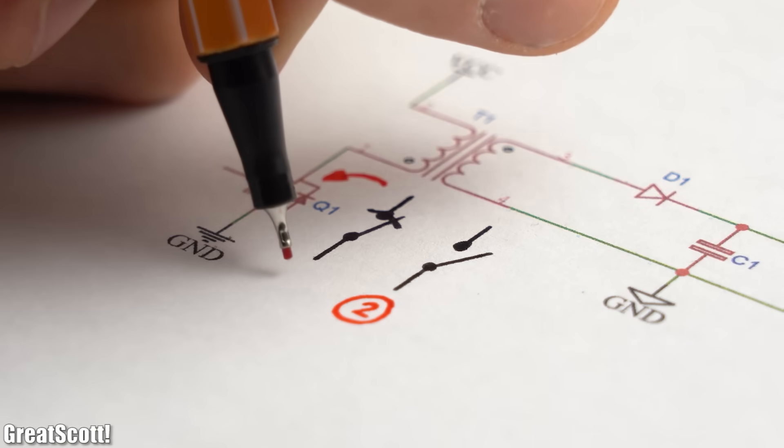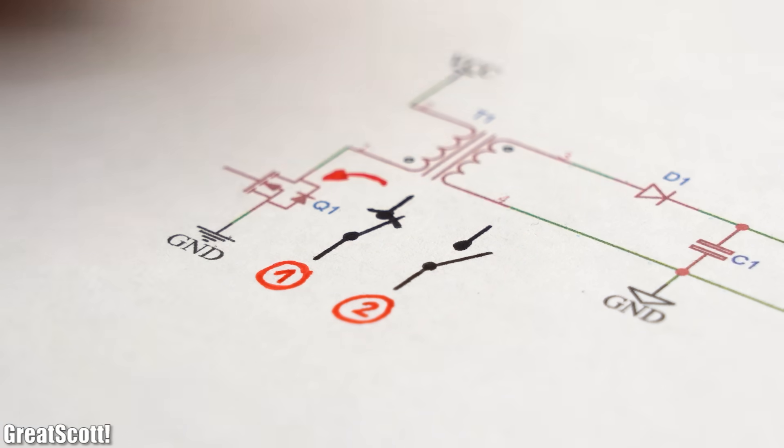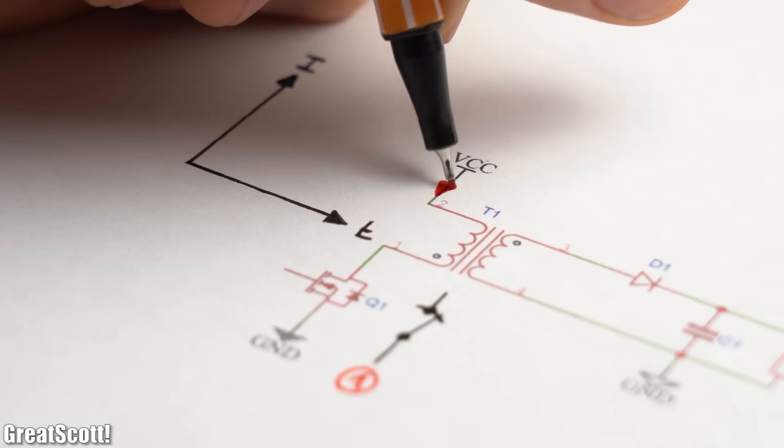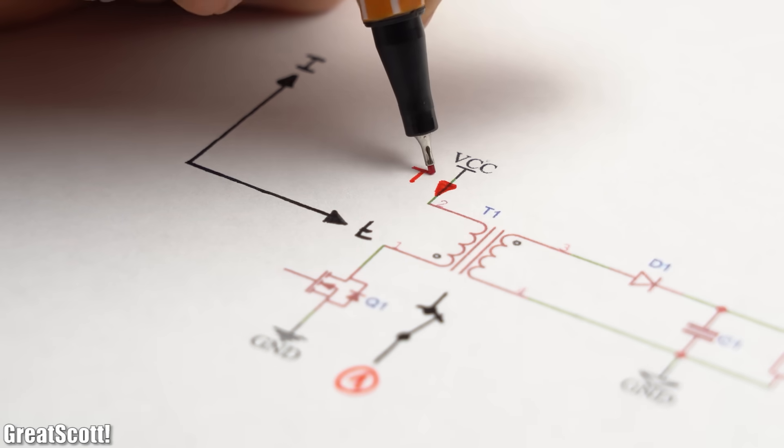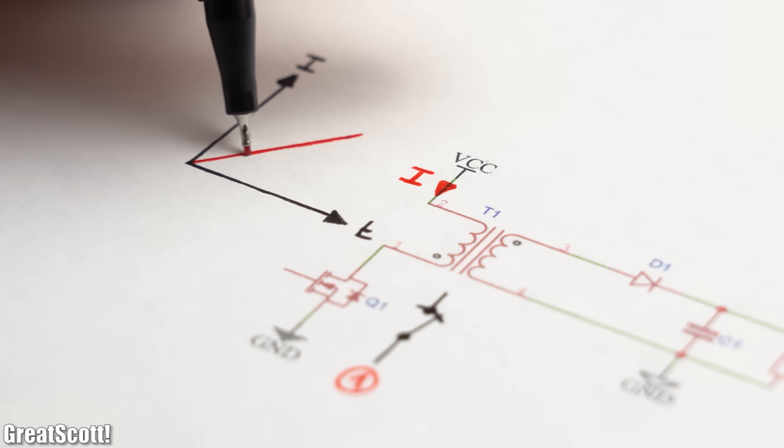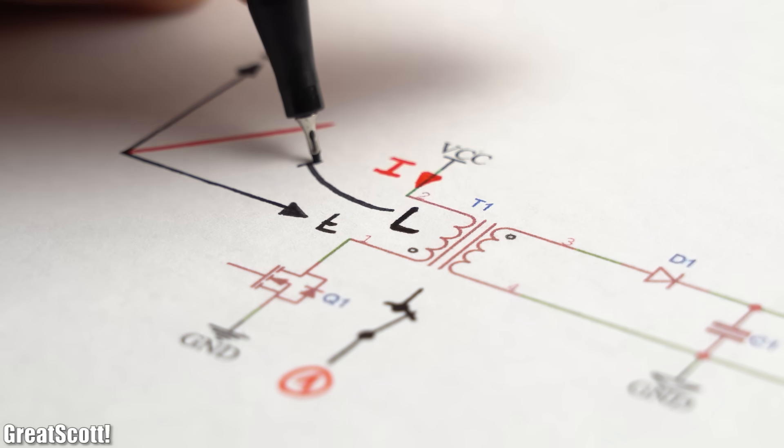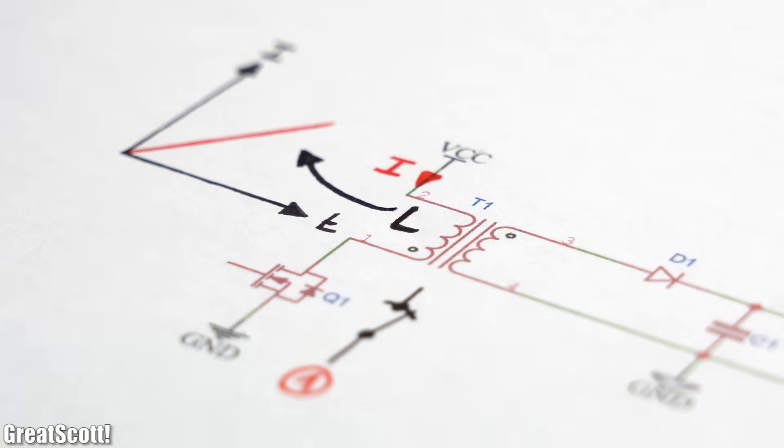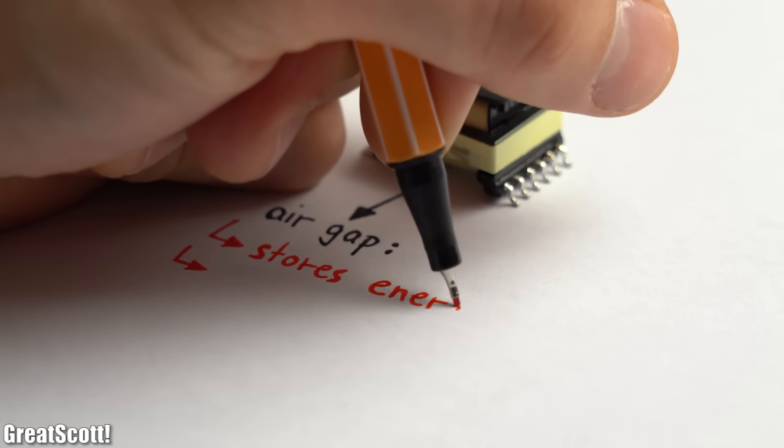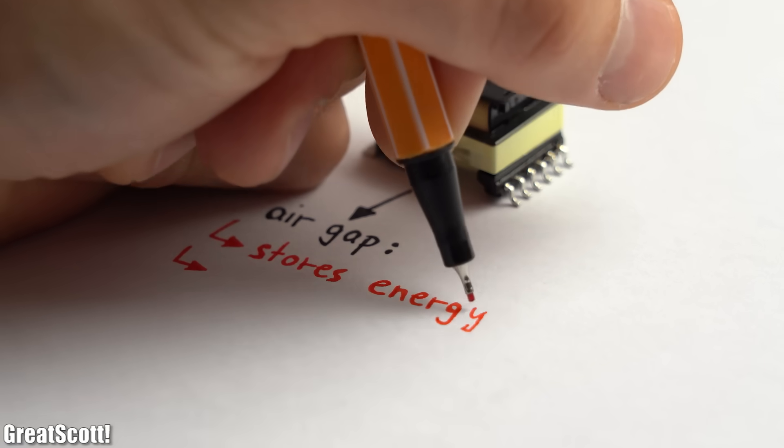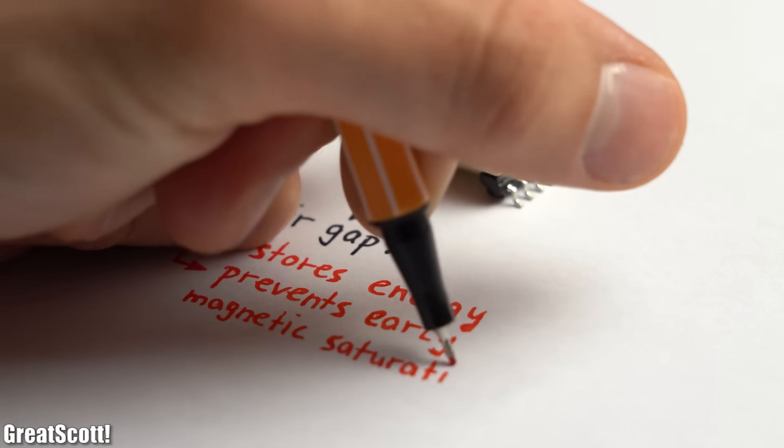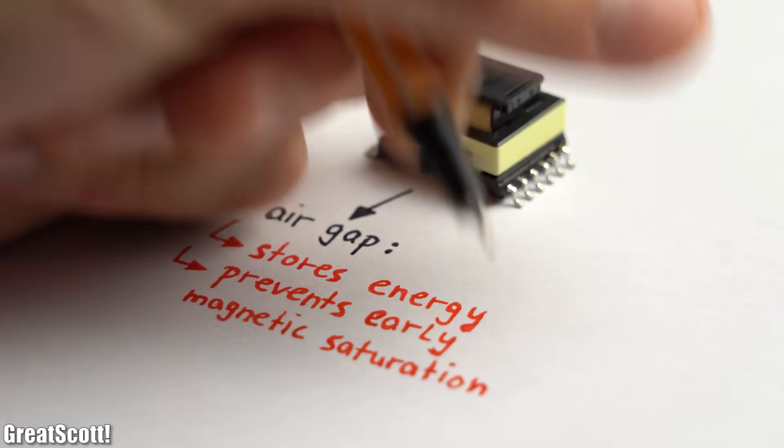There exist two switching states, and those are either MOSFET switch closed or MOSFET switch open. So let's begin with switch closed, at which point the voltage source pushes a linearly increasing current through the primary side. The current does in this case only rise slowly due to the inductance of the transformer and its air gap, in which now energy gets stored. And that is also why the air gap is so important, since it can store lots of energy while preventing the transformer from reaching its magnetic saturation too early.